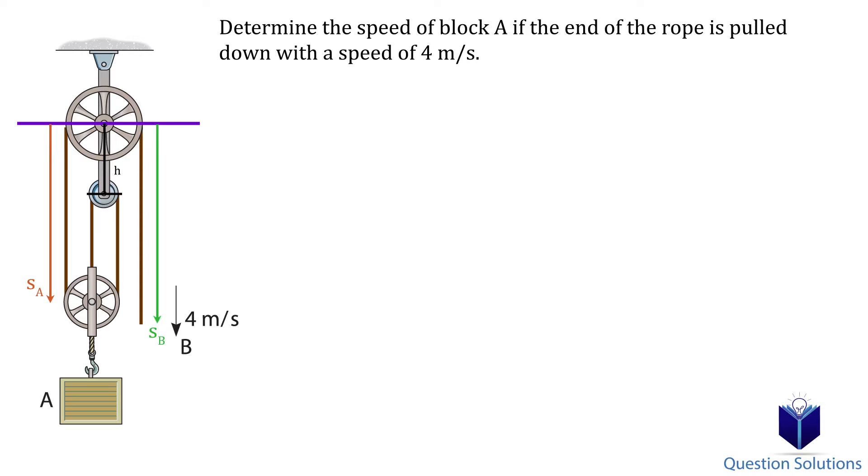You might also have noticed another bar on the bottom, but that bar will actually move up along with the pulley and the block when the rope is pulled. So that piece will be accounted for in our equation.